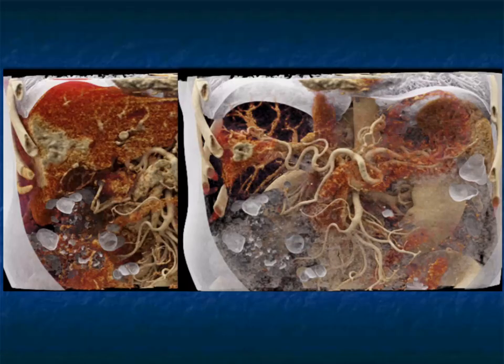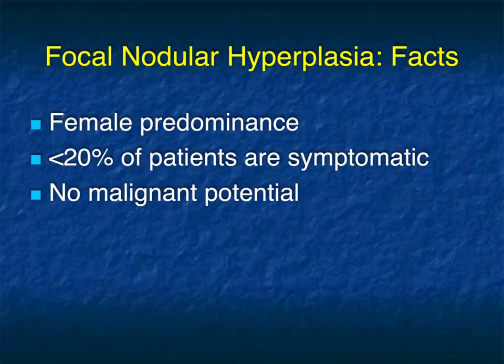Here's the same patient on MIP imaging showing the enhancement and perfusion changes, and also on cinematic rendering. The majority of hemangiomas are classic and we can make the diagnosis in 90% of cases or more, but sometimes it can be a bit of a challenge. Now, another lesion that I really like is focal nodular hyperplasia. FNH is important because it was the first paper I ever wrote, but also because FNH can simulate malignancy if you don't think about it.